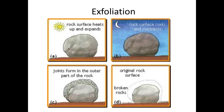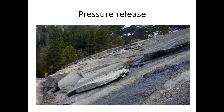Exfoliation — we don't really get this in the UK. It's often known as onion skin weathering because the rock develops layers much like the inside of an onion. The rock heats up and expands, then cools down and contracts. The repetition of that means the outer layers of the rock crack into pieces and gradually over time the rock gets smaller and smaller. That's physical.